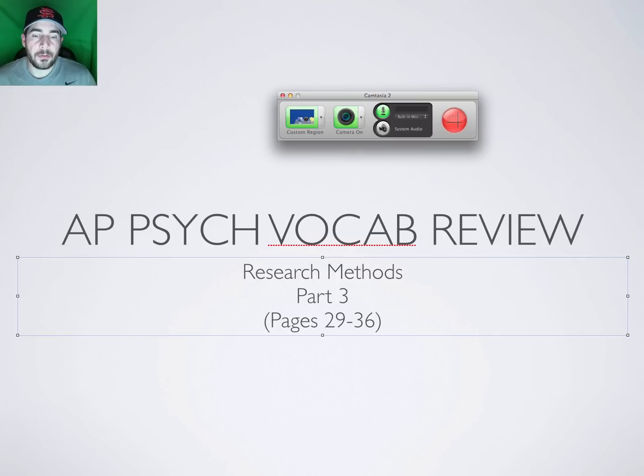This is part three of research methods, covering pages 29 through 36 of the Myers text.